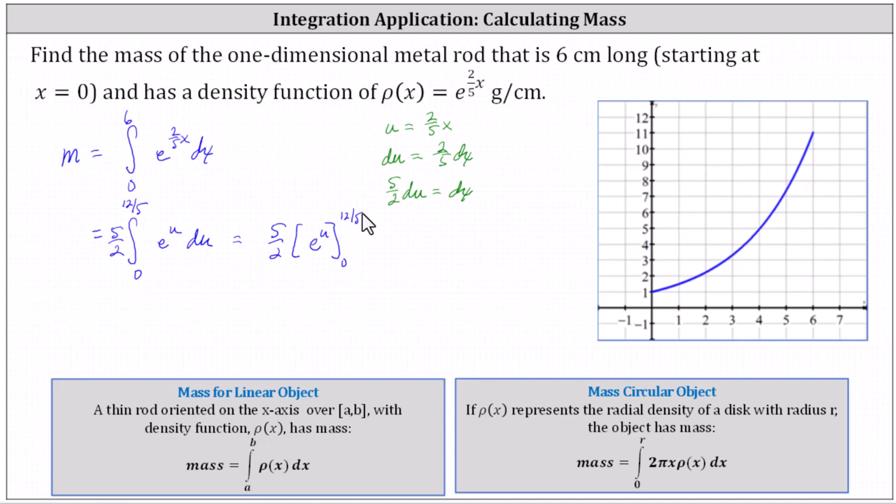And now we determine five halves times the difference of big F of 12 fifths and big F of zero. When u is 12 fifths, we have e to the 12 fifths minus when u is zero, we have e to the zero.